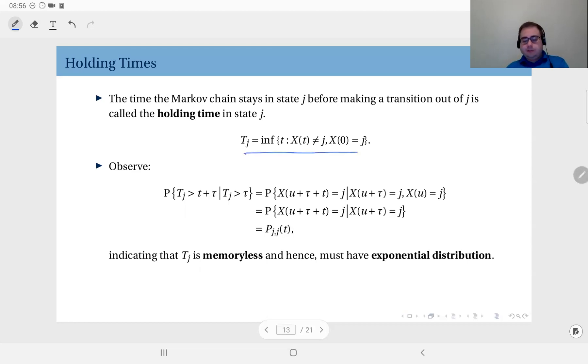So this is the mathematical definition. At zero, you are in j. At t, you are not in j. So this is the set of the t values where you are not in j. And infimum means essentially the minimum value. So that is the minimum value where you are not in j. That means the instant where you moved out of state j. So this is how you define holding times rigorously. This is called the holding time, the amount of time the Markov chain spends in state j.